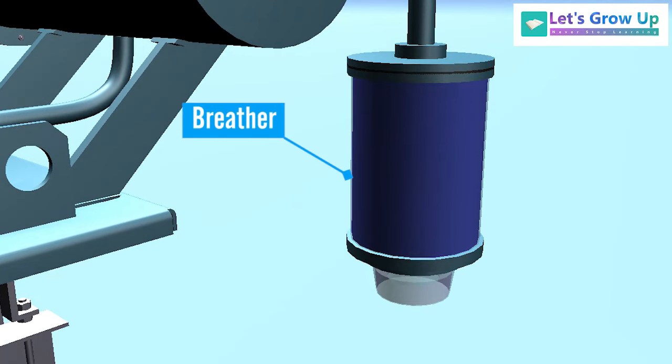Breather: Breather is a device which is used for breathing of transformer. It means air goes in or out from the transformer with the help of a breather.